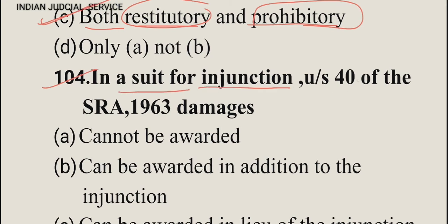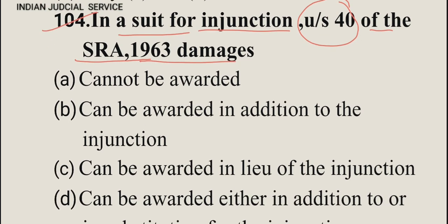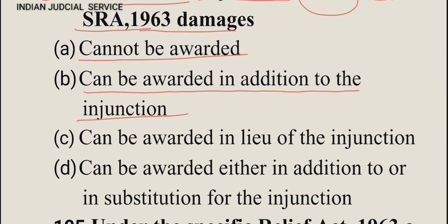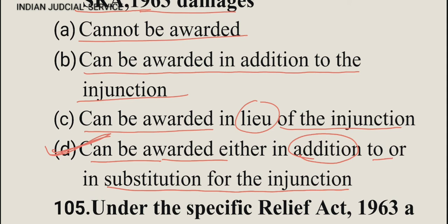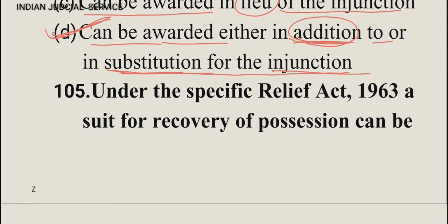Question number 104: In a suit for injunction under section 40 of SRA 1963 — which relates to damages in lieu of or in addition to injunction — option A: damages cannot be awarded, option B: can be awarded in addition to the injunction, option C: can be awarded in lieu of the injunction, option D: can be awarded either in addition or in substitution for the injunction. The correct answer is option D.